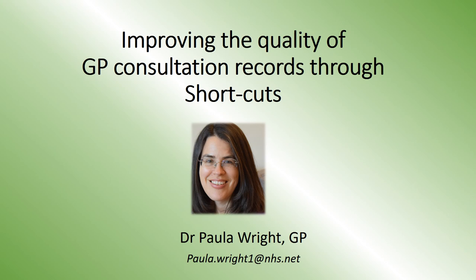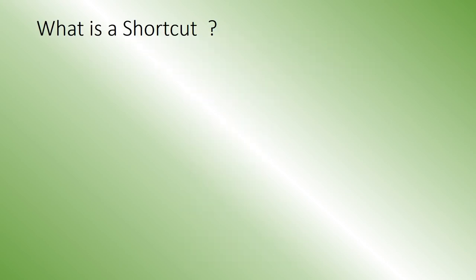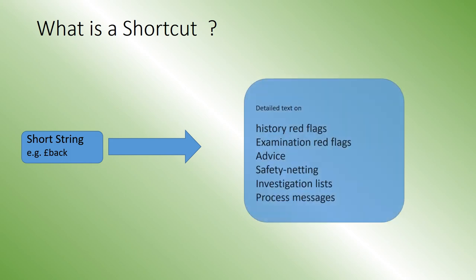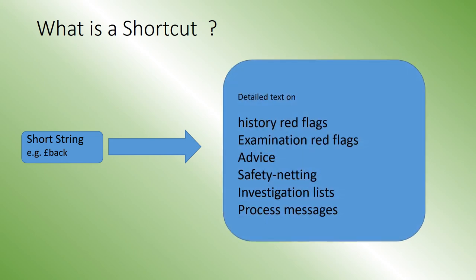Welcome to my short video about improving the quality of GP consultation records through the use of shortcuts. A shortcut is when you write a small string like pound-back and it's automatically replaced by some text, which could for example be history red flags, examination red flags, advice, safety netting, a list of investigations, or a process message.